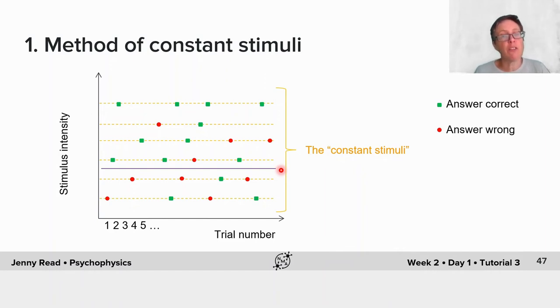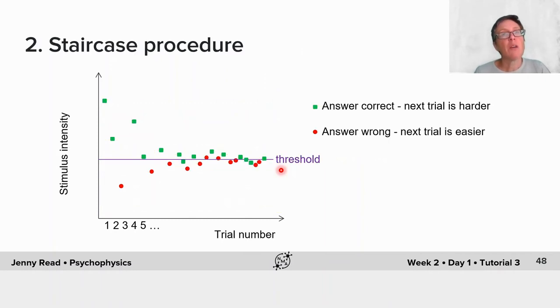You can see this involves a large number of trials, which is why it's inefficient. In contrast, a staircase procedure will typically start off with a high stimulus intensity to make the task very easy. We expect the subject to get the answer right. Then on the next trial, we make the stimulus intensity lower, so the trial's harder. We carry on reducing the stimulus intensity until they make a mistake. Then we make it easier again.